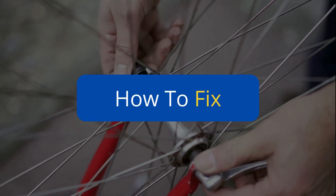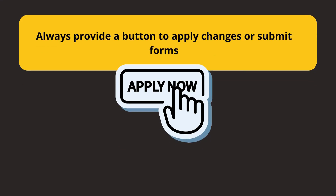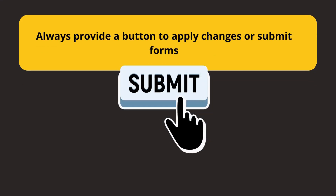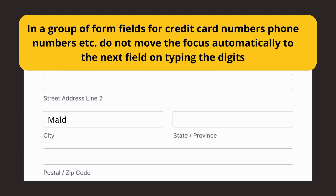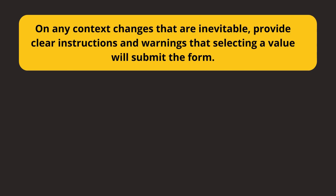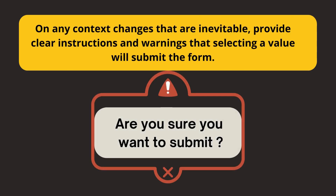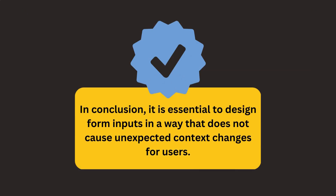Now let's see how we can fix them. One should always provide a button to apply changes or submit forms. In a group of form fields for credit card numbers, phone numbers, etc., one should not move the focus automatically to the next field on typing the digits. And on any context changes that are inevitable, one should provide clear instructions and warnings that selecting a value will submit the form.